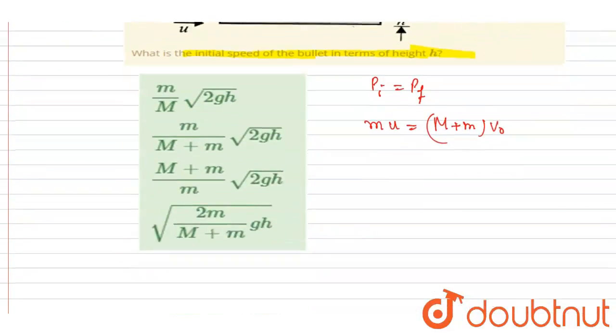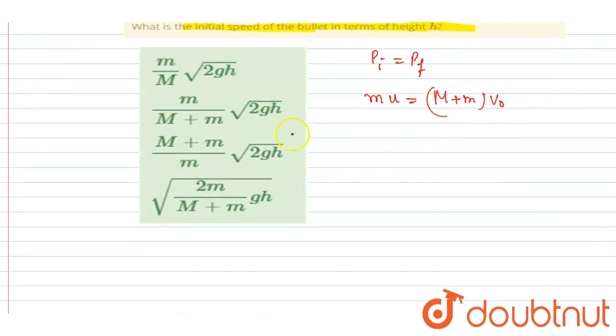from the work-energy theorem. If I write down the work done by gravity equals change in kinetic energy, the bullet plus wooden block system went up by height h, so work done by